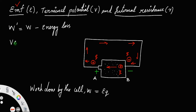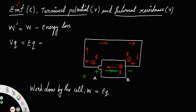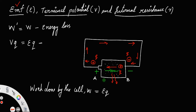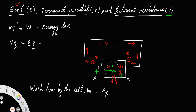These internal materials offer a resistance to the flow of charge, so energy is dissipated in the form of heat. Let R be the internal resistance. According to Joule's heating effect, the energy loss — heat H — equals I²RT, where I is the current flowing through the circuit, R is the internal resistance, and T is the time. So we can write the energy loss as I²RT.